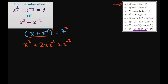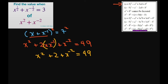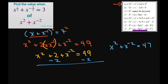And this equals 49. Again, the middle term 2 times x times x to the power of negative 1 is just going to equal 2. So you're going to have x squared plus 2 plus x to the power of negative 2 equals 49. And when you subtract 2 from both sides, you get x squared plus x to the power of negative 2 equals 47. So the value is 47.